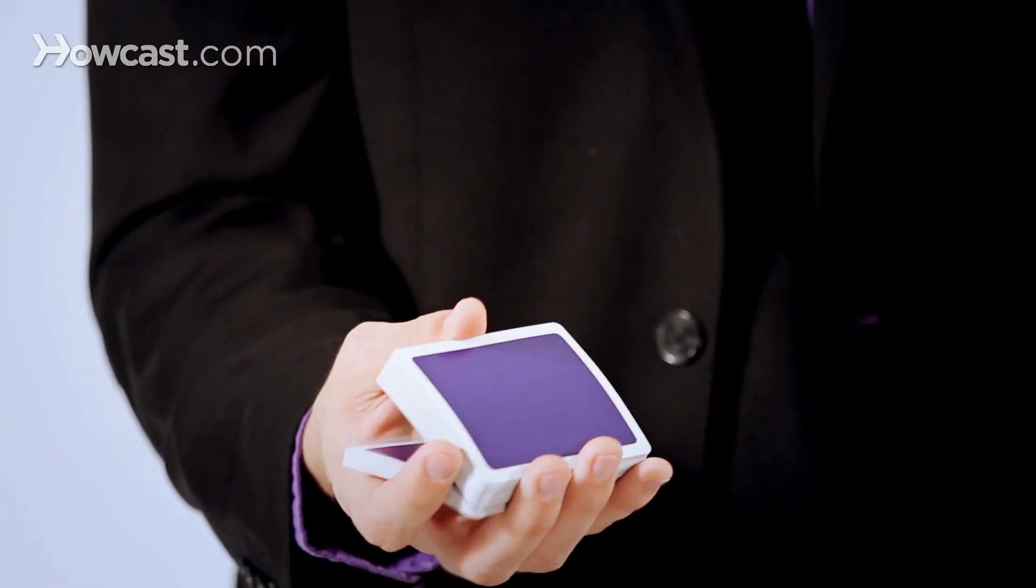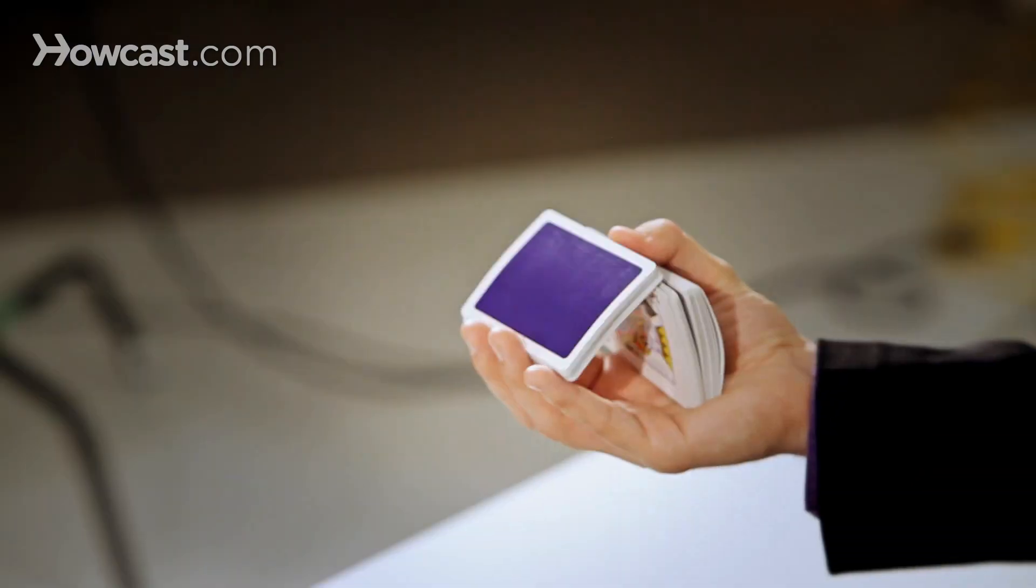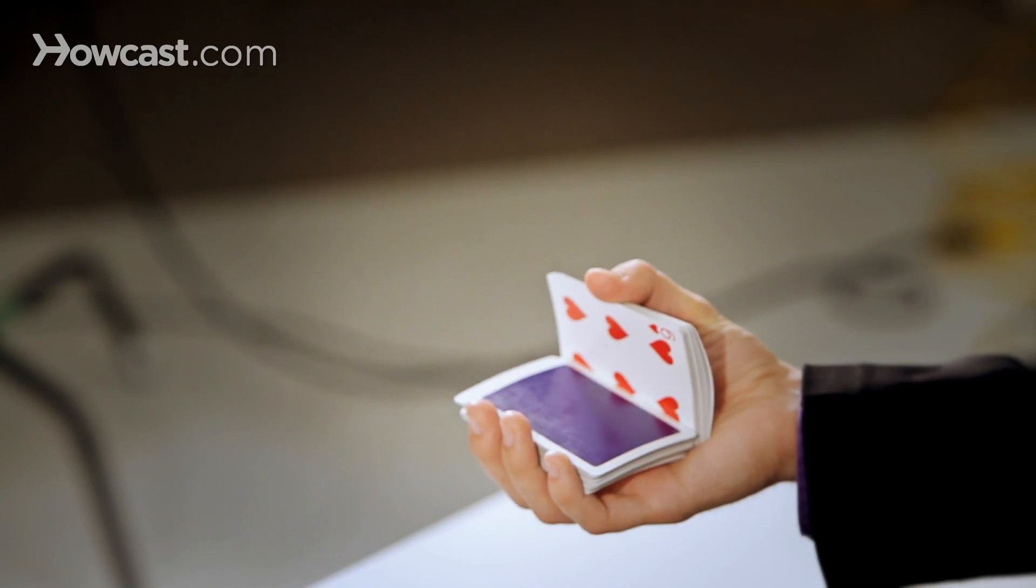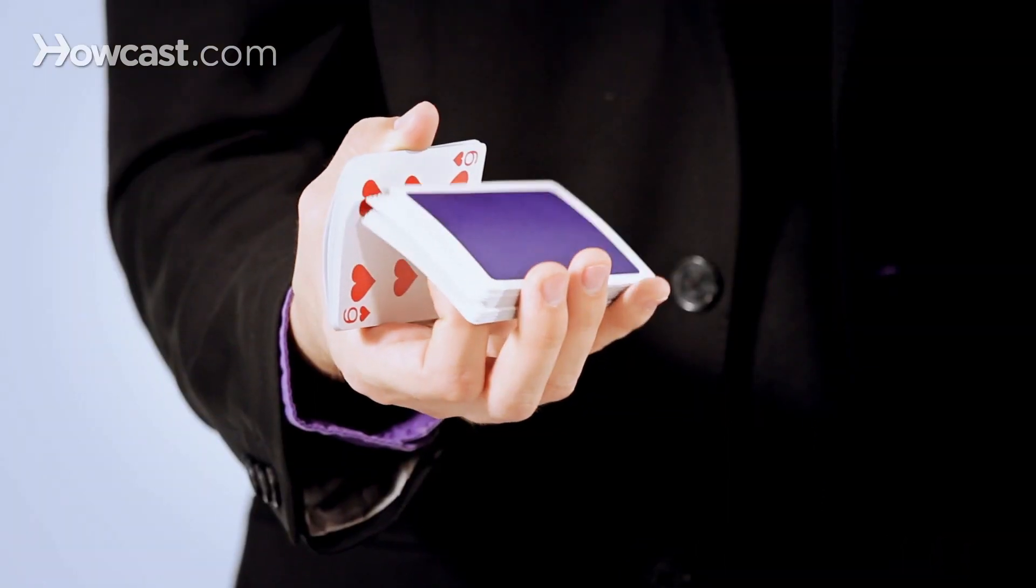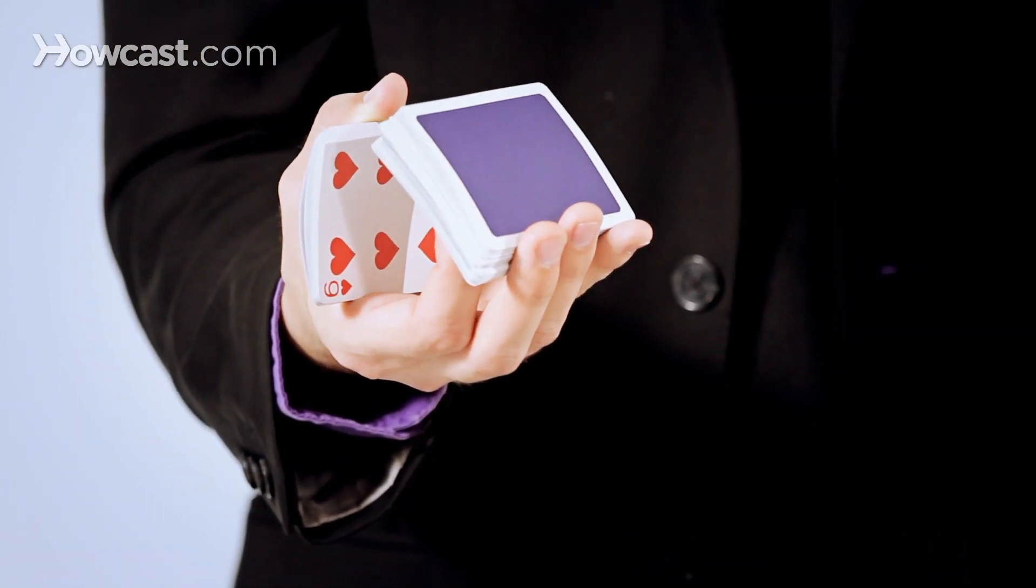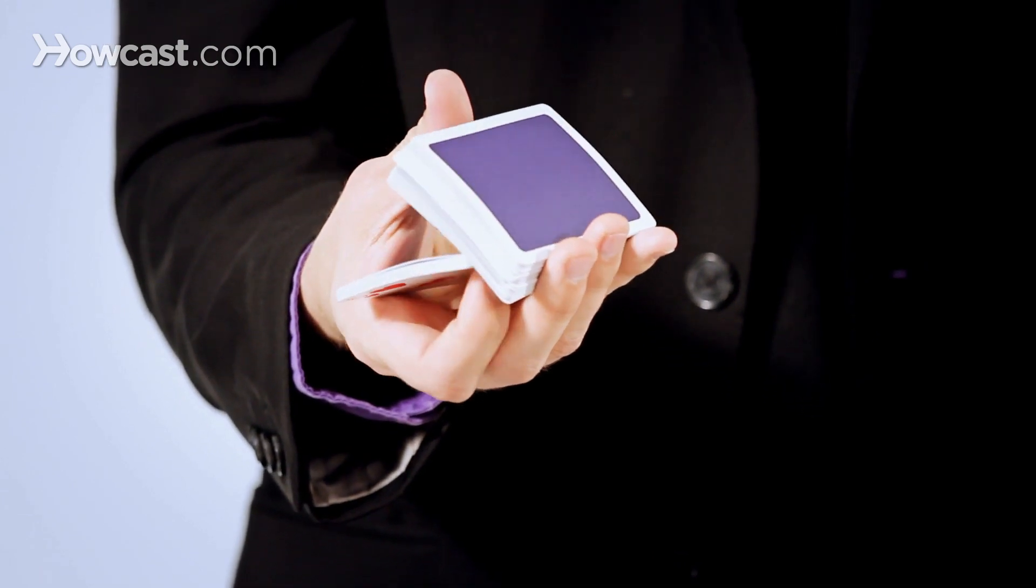So the first action will be like this. You do essentially a triple cut, allow this to fall. Your index finger kicks this back up, so you're going to allow this to tilt along with gravity, and you're going to allow that to fall back in.